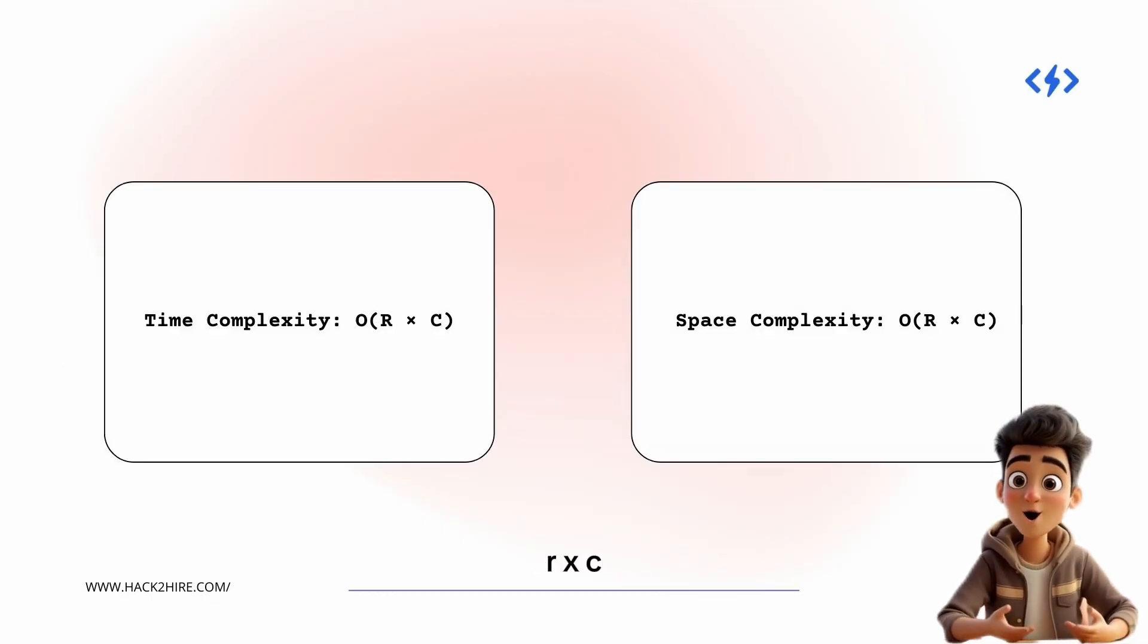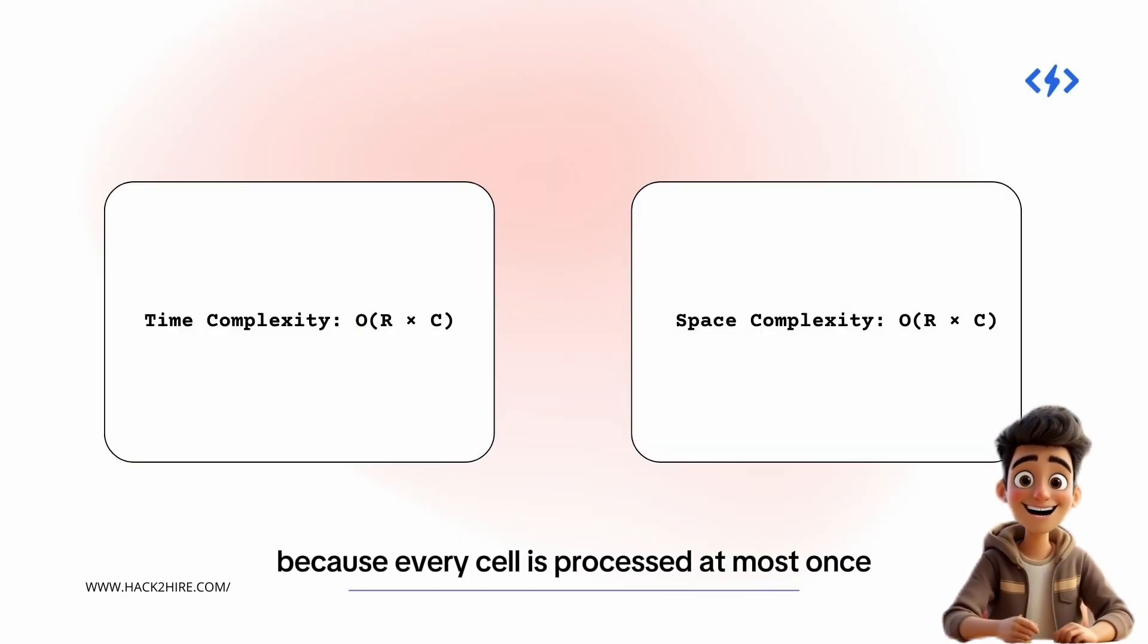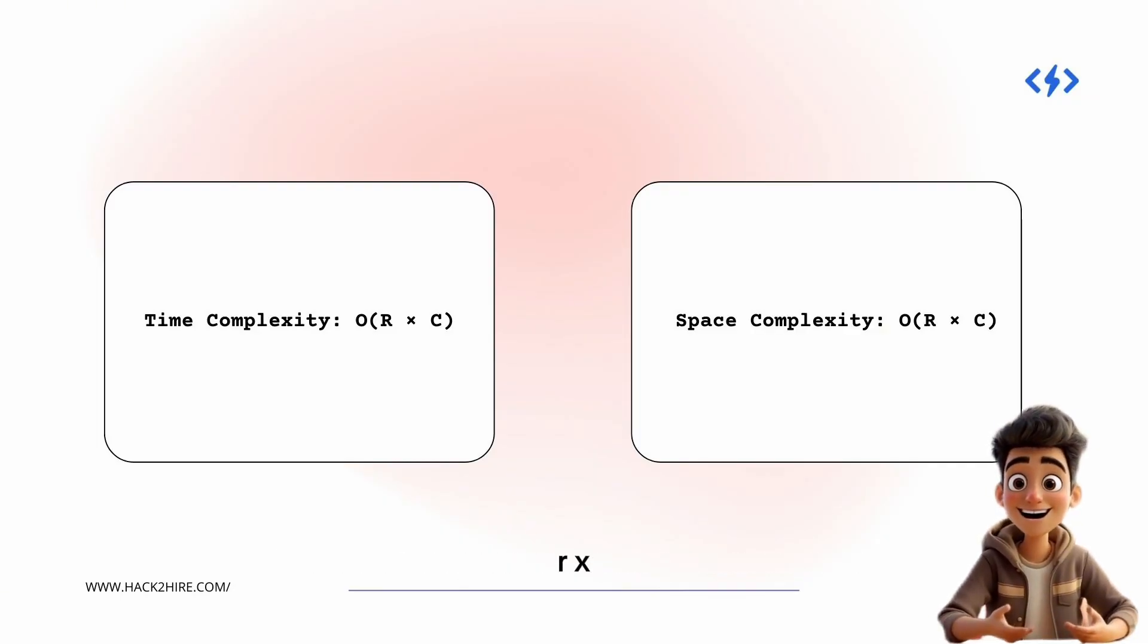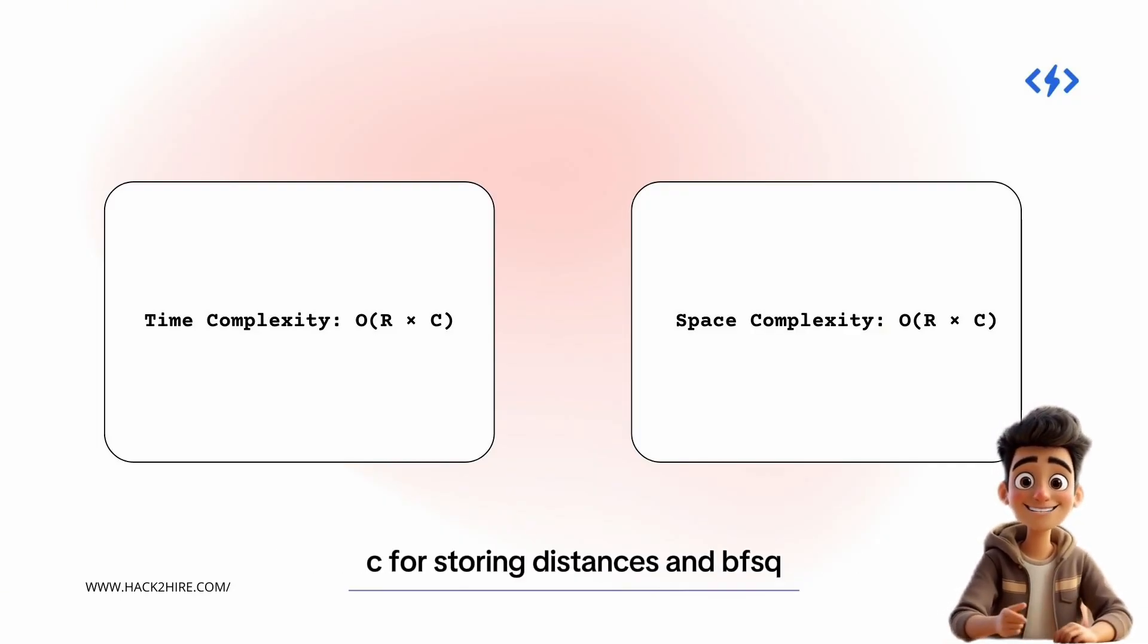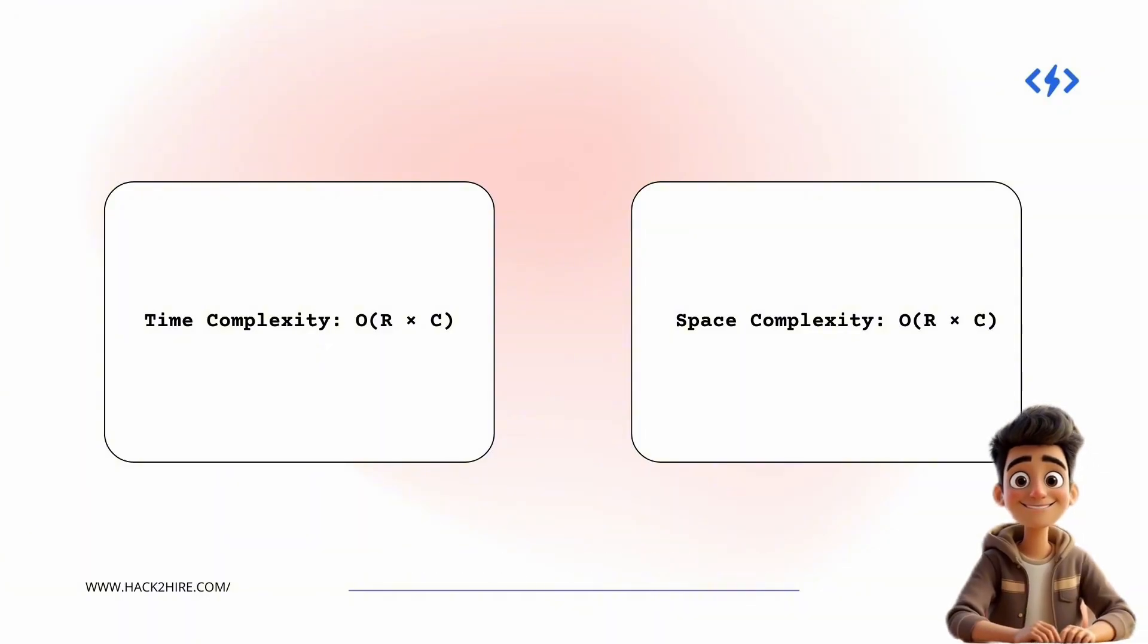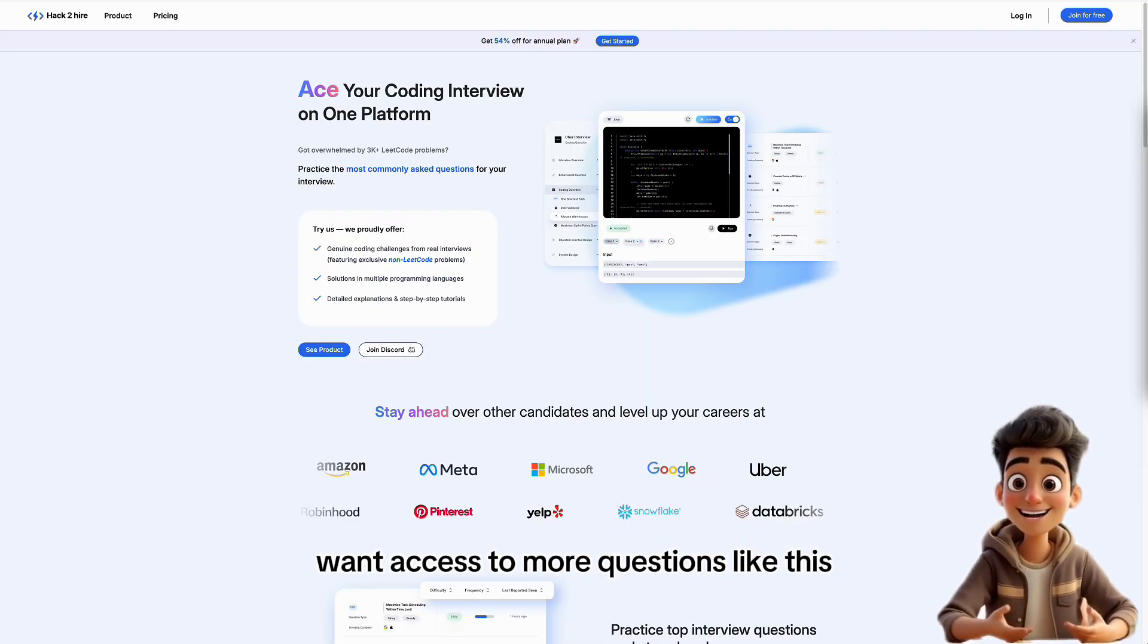Time Complexity: O(R×C), because every cell is processed at most once. Space Complexity: O(R×C), for storing distances and BFS queue.